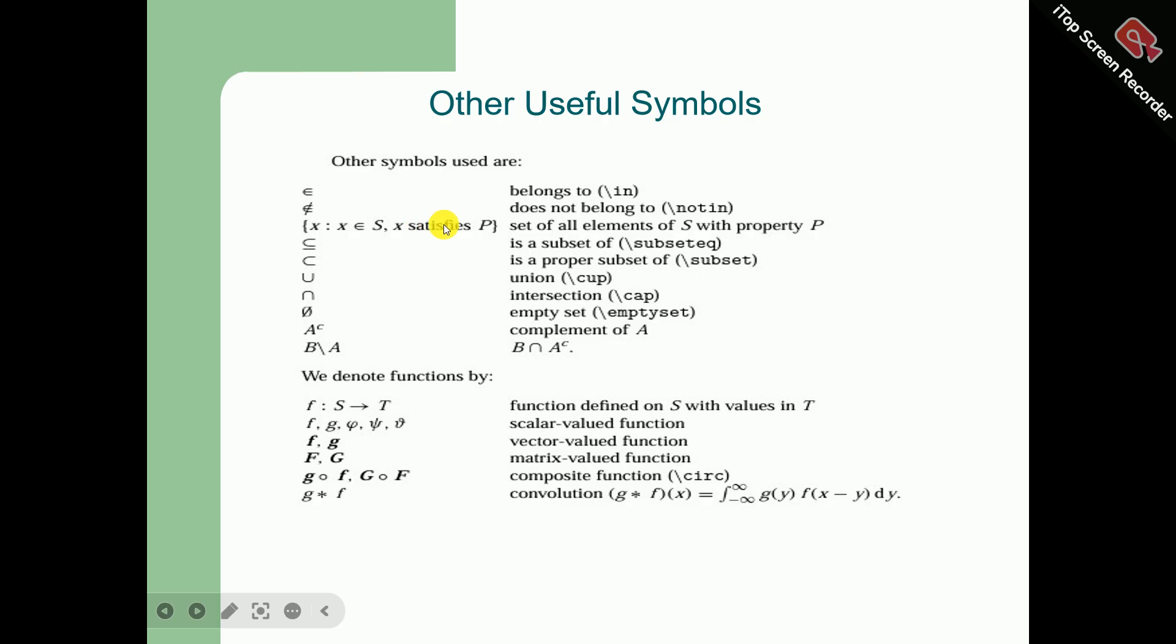This symbol is 'subset of,' this symbol is 'proper subset of,' this is union, this is intersection, this phi is null set, this is complement of A, this is B intersection A complement.